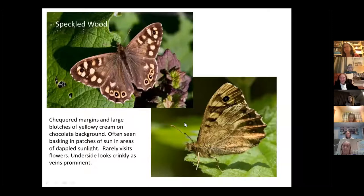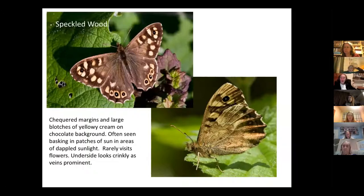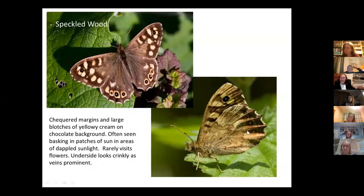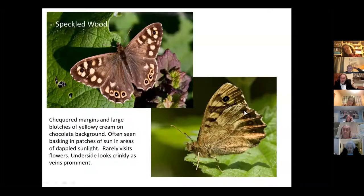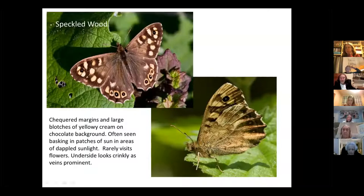Another species that usually doesn't fly until late March but may be around even now is the speckled wood. The underside of the speckled wood looks somewhat similar with eye spots, but it has a sort of crinkly appearance because the veins are quite prominent — so depending on where the light is coming from you get this slightly fluted appearance. There is a single eye spot in a cream patch, and lots of creamy spots — quite a difference in wing tip and edge compared with the others.